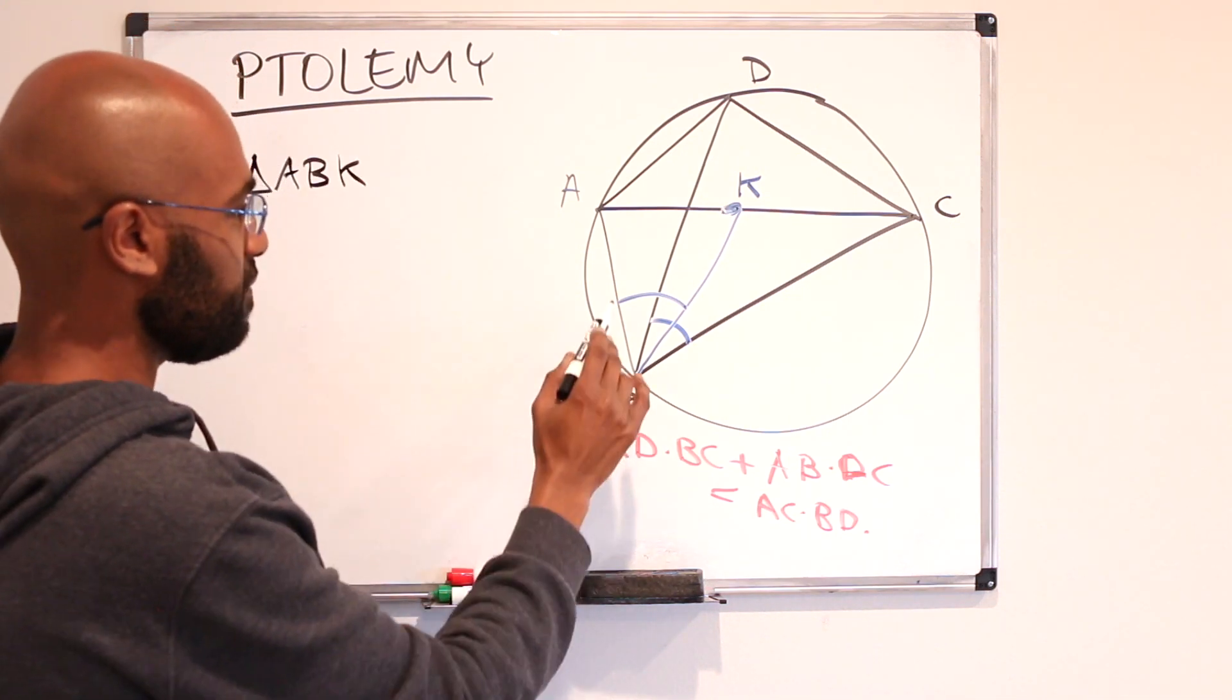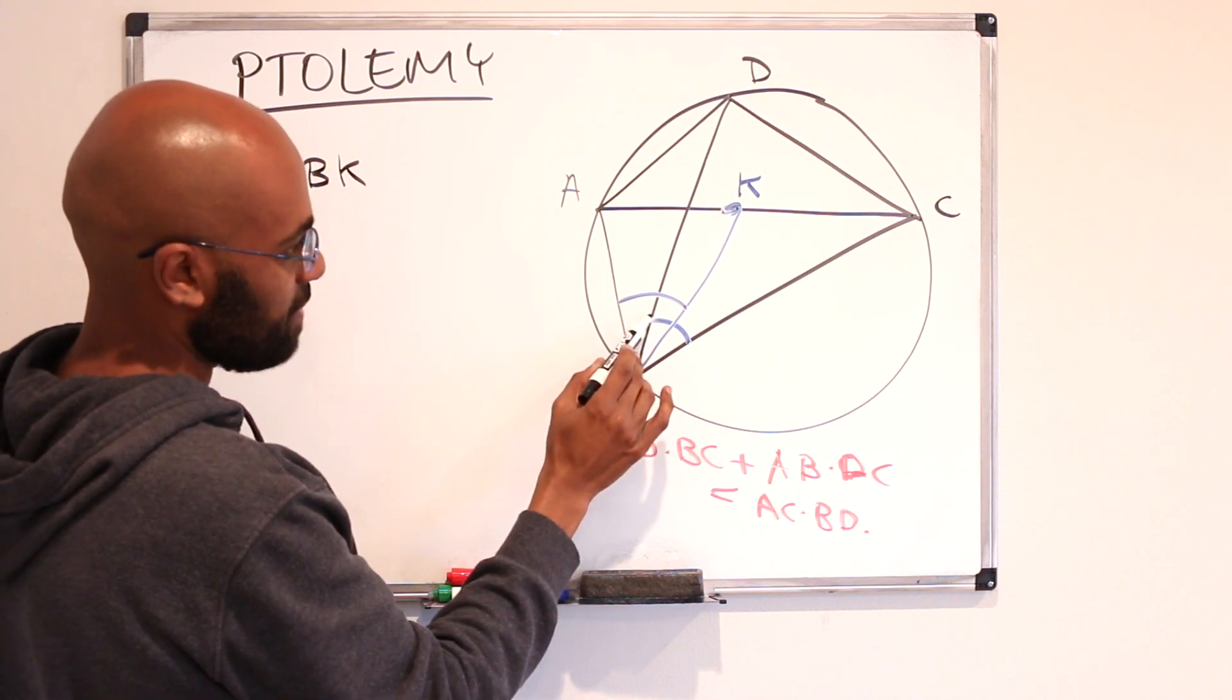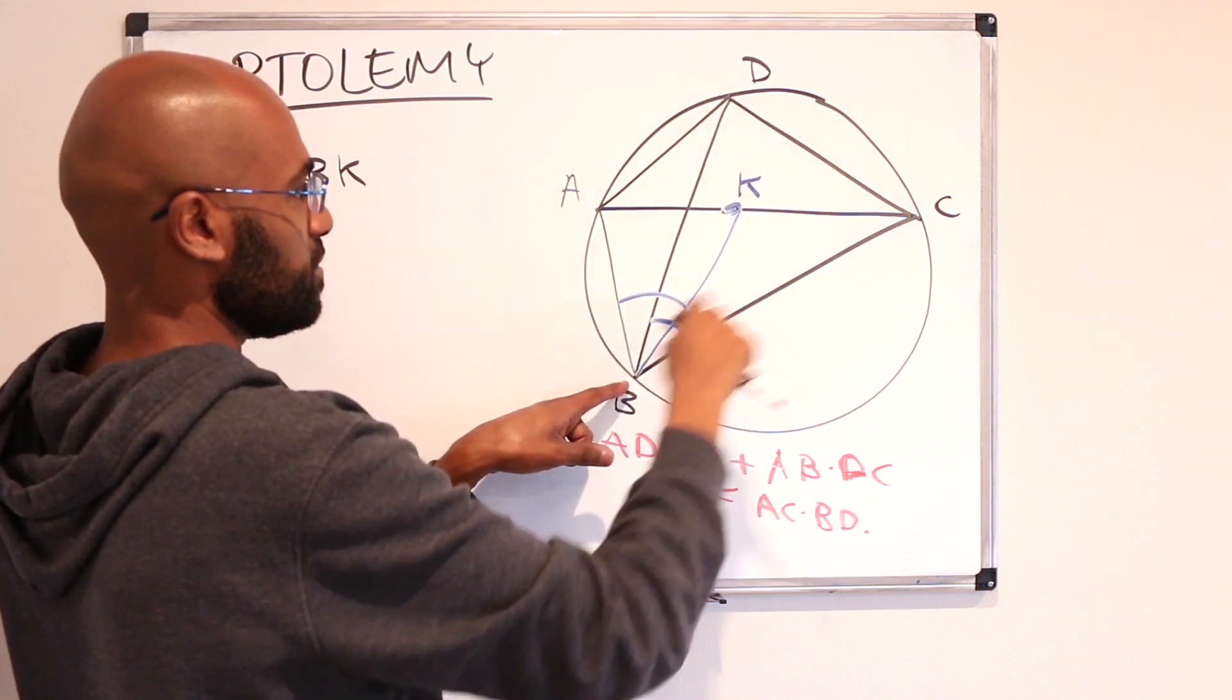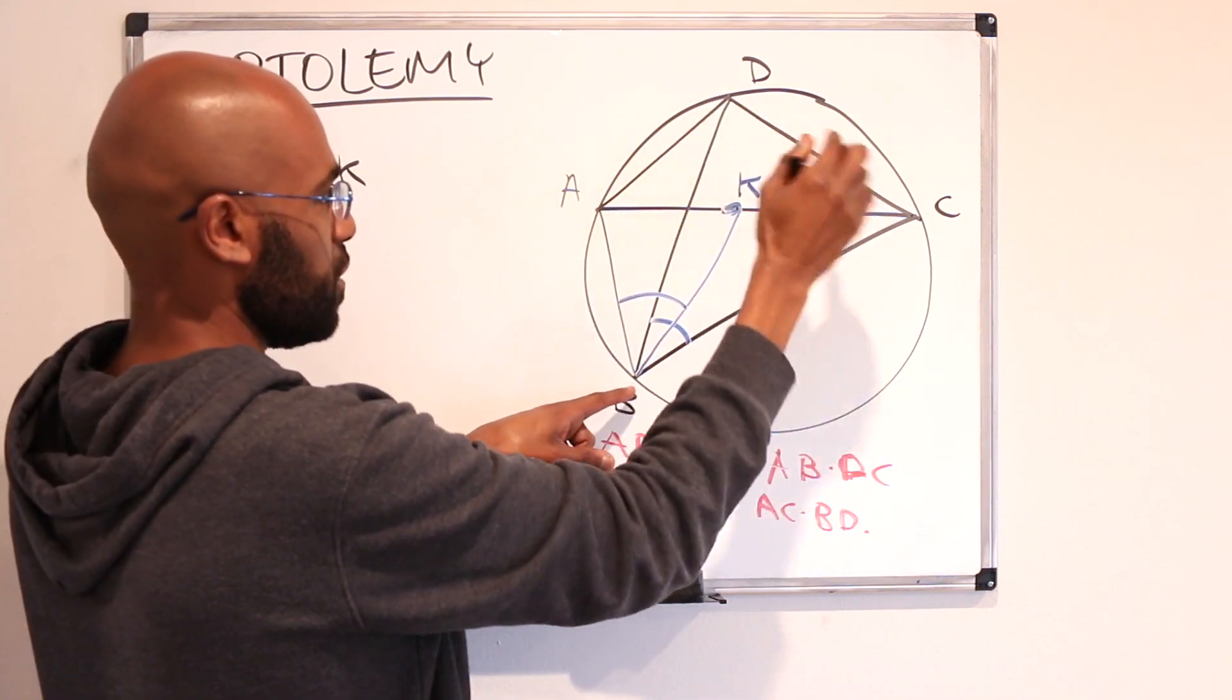Now if we look at triangle ABK, we have this angle right over here which happens to be the same as this angle right over here. Now this is a quarter of this circle so we have any angles subtended by it is the same regardless of where it is.